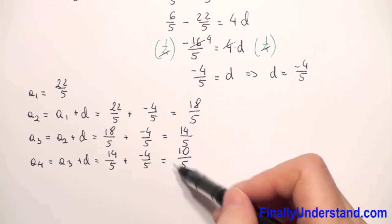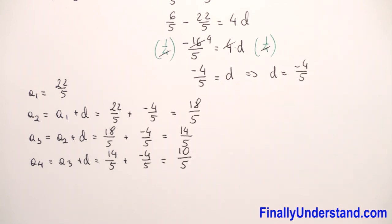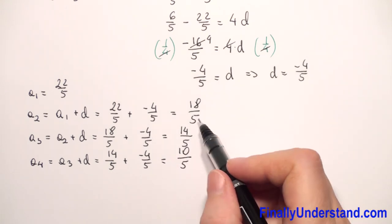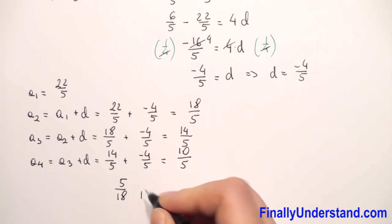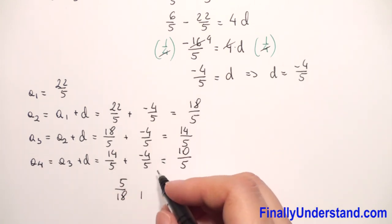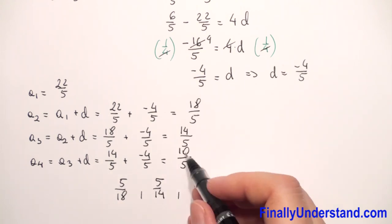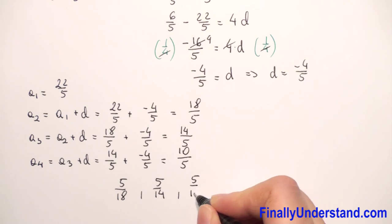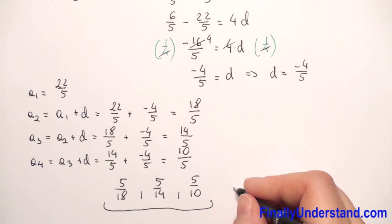Now we take the reciprocals of these three arithmetic progression terms to get our three harmonic means. The reciprocal of a2 (18 over 5) is 5 over 18. The reciprocal of a3 (14 over 5) is 5 over 14. The reciprocal of a4 (10 over 5) is 5 over 10. These are our three harmonic means.